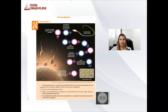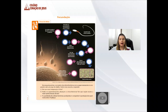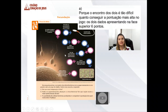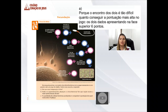A próxima atividade era a página 50, o exercício troca de ideias, que mostrava a imagem sobre a fecundação. Vocês tinham que responder: no esquema, o encontro da célula feminina com o espermatozoide é comparado com o jogo de dados. Letra A: por que essa comparação é feita? Porque o encontro dos dois é tão difícil quanto conseguir a pontuação mais alta do jogo, que seria o 6 dos dois dados, a face superior de 6 pontos.